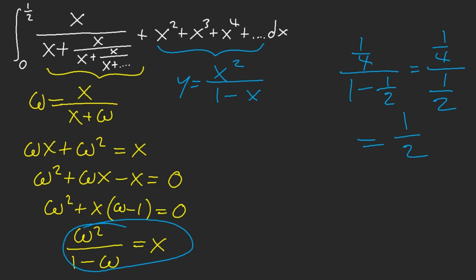So that means this integral is equal to 1/4. The answer of this integral is 1/4. It's crazy, but yes — these two infinite functions are inverses of each other. A lot of people would use the quadratic formula and get disgusted by how nasty the integral becomes. With the sum of inverses, we can immediately solve this as equal to 1/4.